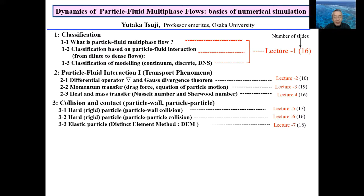In particle tracking simulation, it is not easy to find collision partners from a large number of particles. A stochastic method for finding collision partners from a huge number of particles is described in Lecture 6.